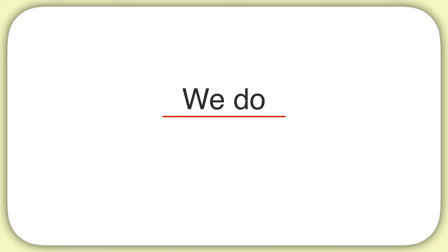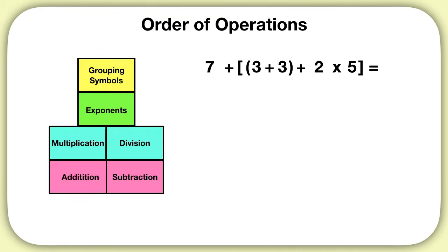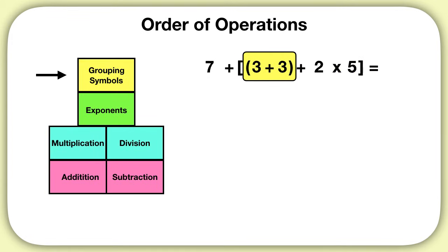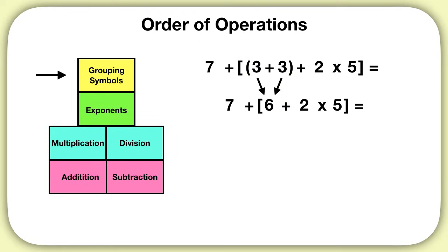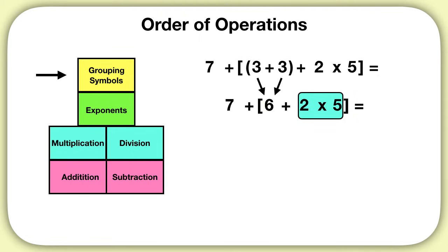Let's do one of these together. Let's use the order of operations to solve this problem. What piece should I solve first? We look for grouping symbols, and we see these brackets here. Inside of the brackets are parentheses. We'll solve those first. 3 plus 3 is 6. Then we bring down the rest of our equation. Now inside of those brackets, I'll solve the multiplication before addition. So 2 times 5 is 10. Now solve the rest of this on your own.